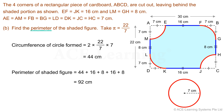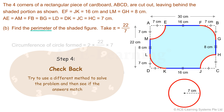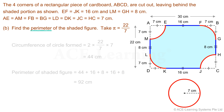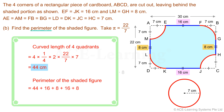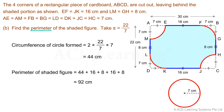Is this answer correct? Let's find out in the final step. Step 4: Check back. Let us use a different method to find the perimeter of the shaded figure. The curved lengths in the figure are the curved lengths of 4 equal quadrants, so the curved length of 4 quadrants equals 4 times the curved length of 1 quadrant, which gives 44 centimeters. The sum of all lengths on the outline of the shaded figure is 92 centimeters. This matches the answer found earlier, so our answer for the perimeter is correct. The perimeter of the shaded figure is 92 centimeters.